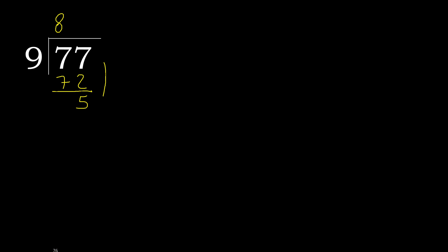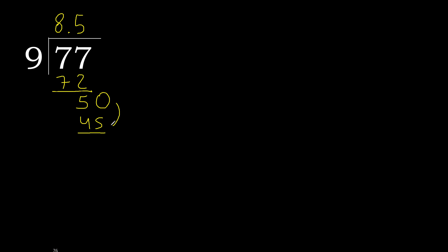Next. There is no number, therefore complete — always complete with 0, here with a point. 0 point, ok. Now 59: 9 multiplied by 6 is greater, so multiplied by 5. 45 is not greater, subtract. Next — there is no number, therefore complete. Always complete with 0; the point is here. 0 point.